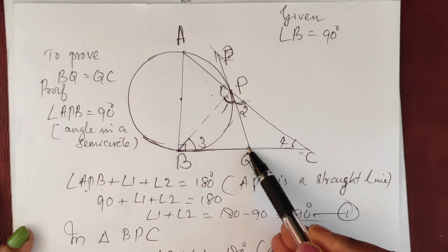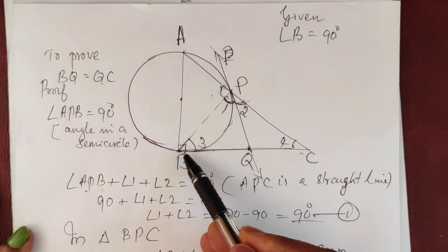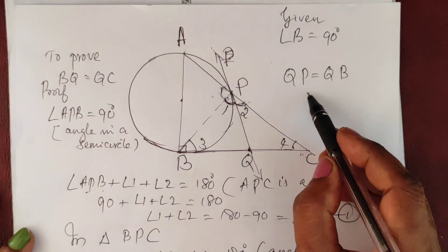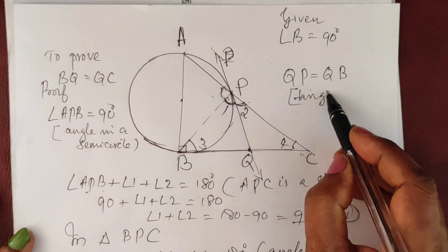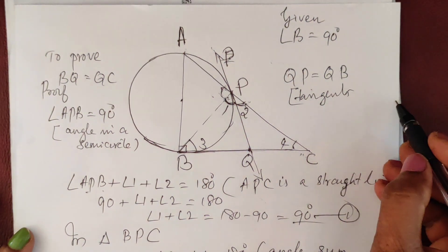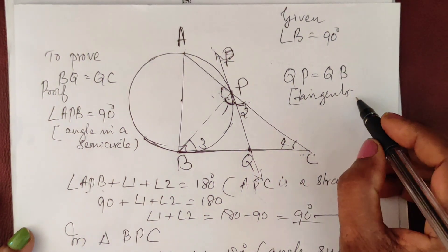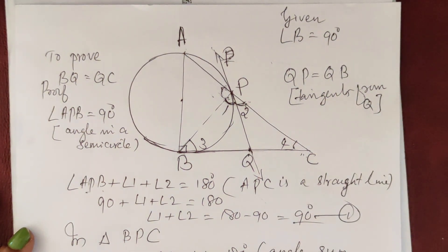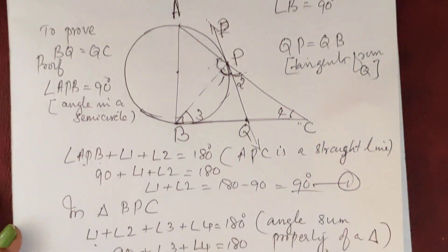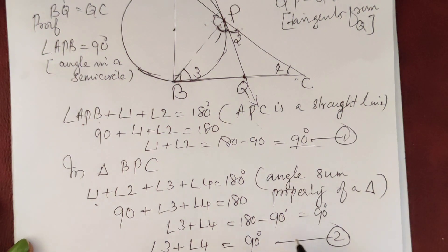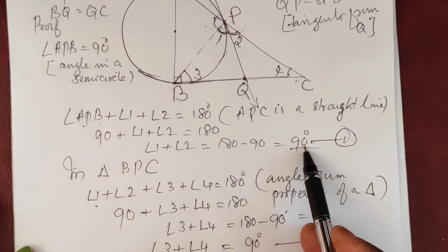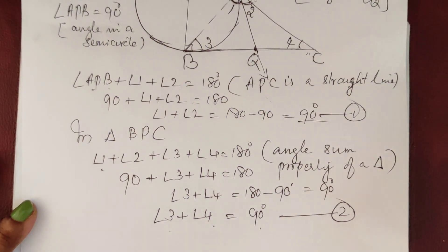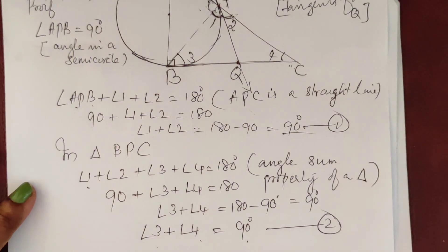Now, tangents drawn from an external point to a circle are equal in length. So, simply, tangents from point Q: QP equals QB. These two tangents are equal. Now we have the relation: angle 1 plus angle 2 equals 90, and angle 3 plus angle 4 equals 90.